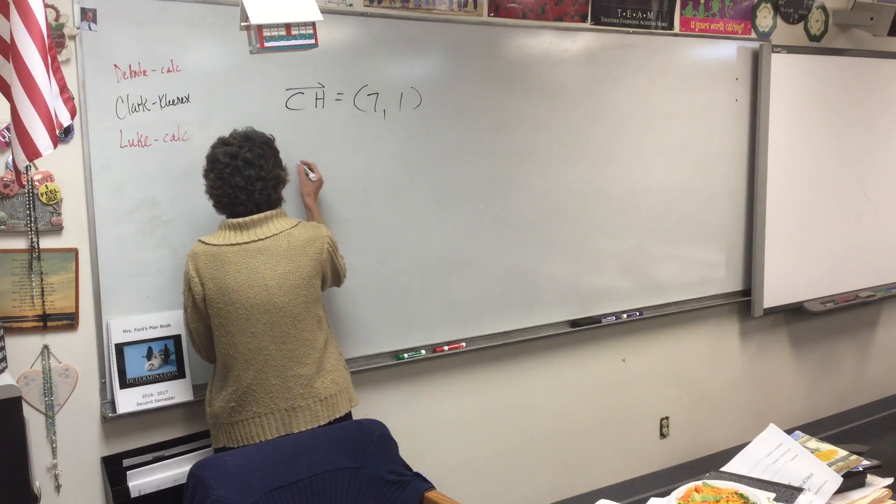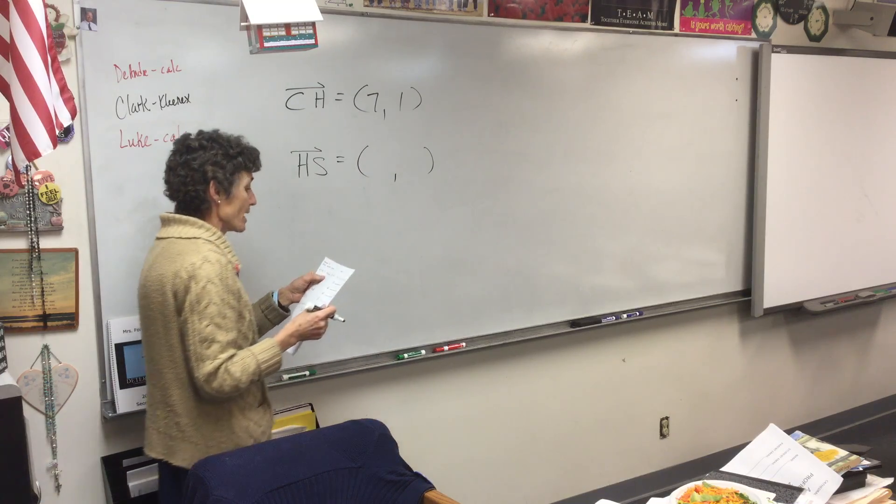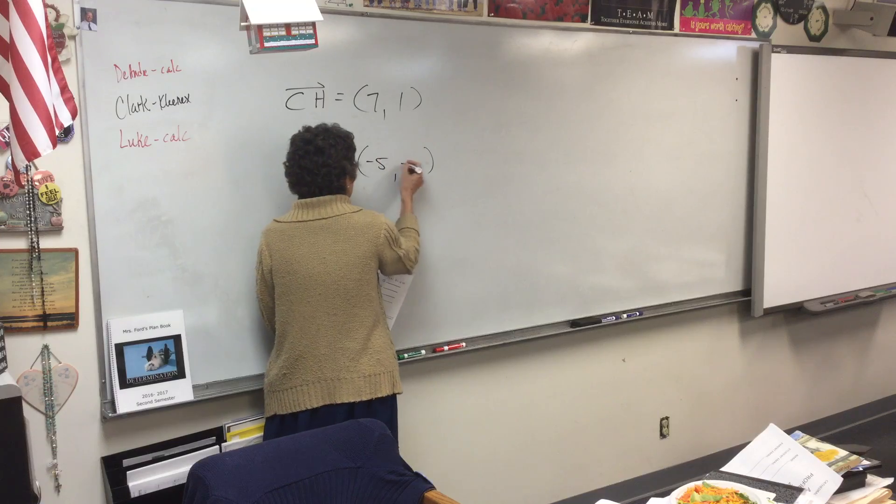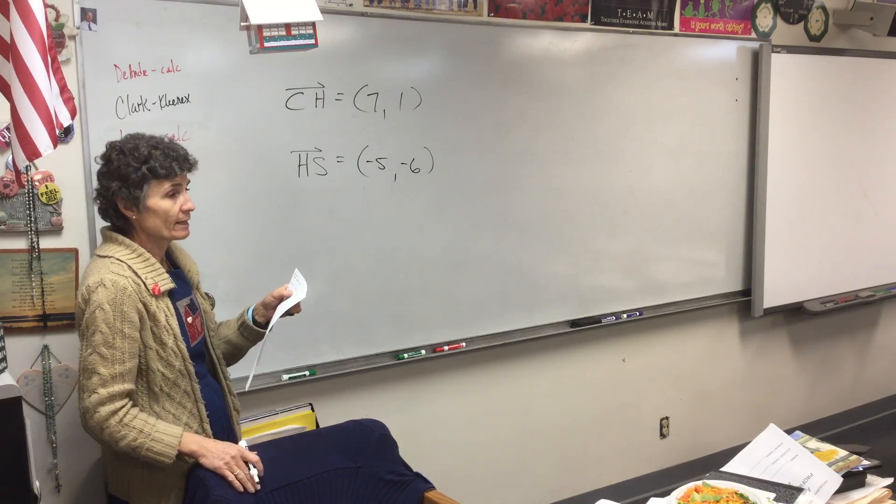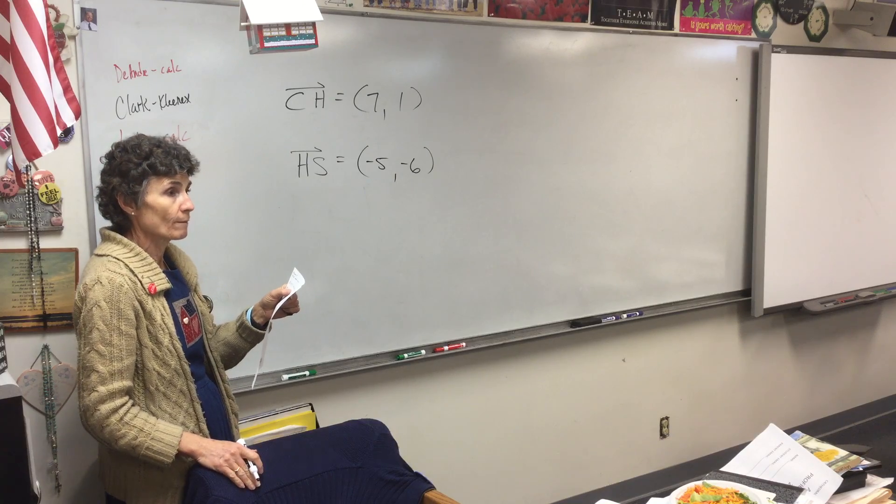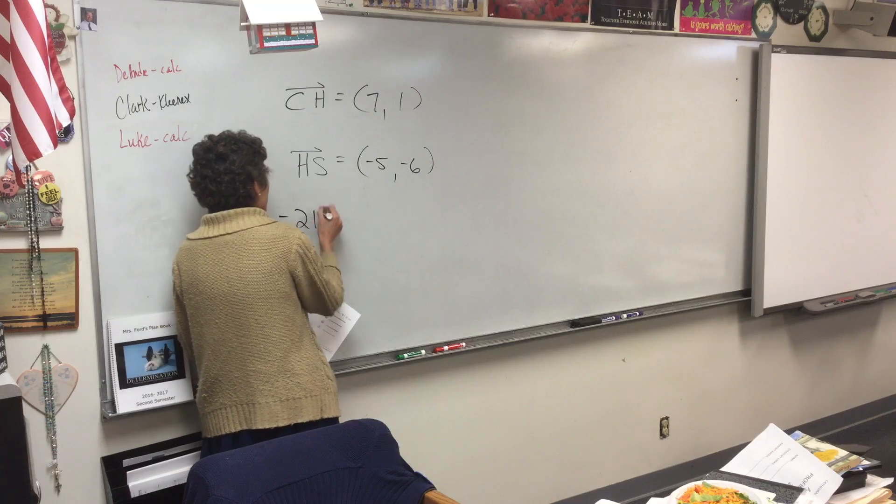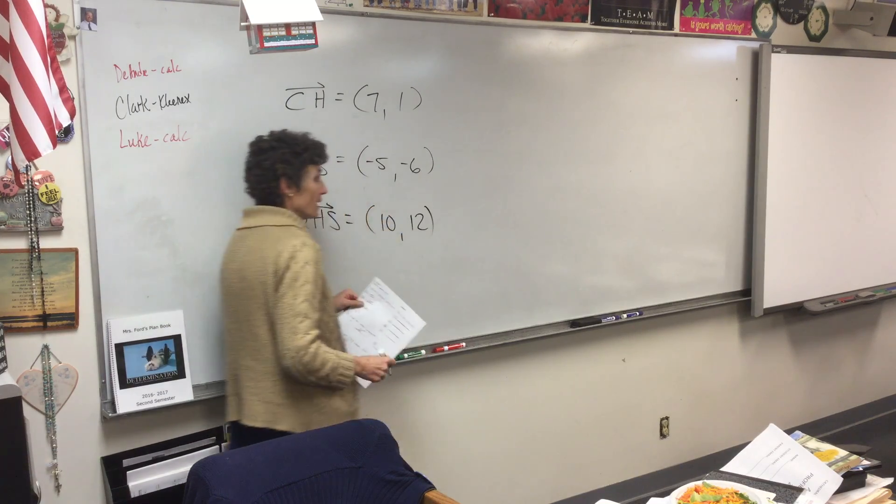Now, negative two HS. Well, first we have to figure out what HS is. So what's HS? Negative five, negative six. That is HS. We're going from four to negative one and from two to negative four. Now, we're going to multiply that by negative two. So that would be ten comma twelve.